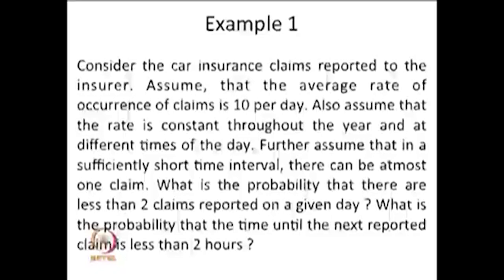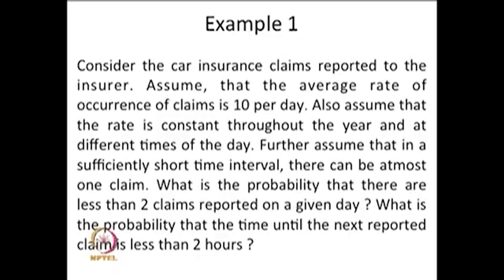Consider car insurance claims reported to an insurer — it need not be car insurance, you can think of any motor insurance or any particular type of vehicle. Assume that the average rate of occurrence of claims is 10 per day, and this rate is constant throughout the year and at different times of the day. Even though this is an average quantity, there is a possibility that some day there is no claim reported at all, or some day 30 or 40 claims are reported — all possibilities are there.